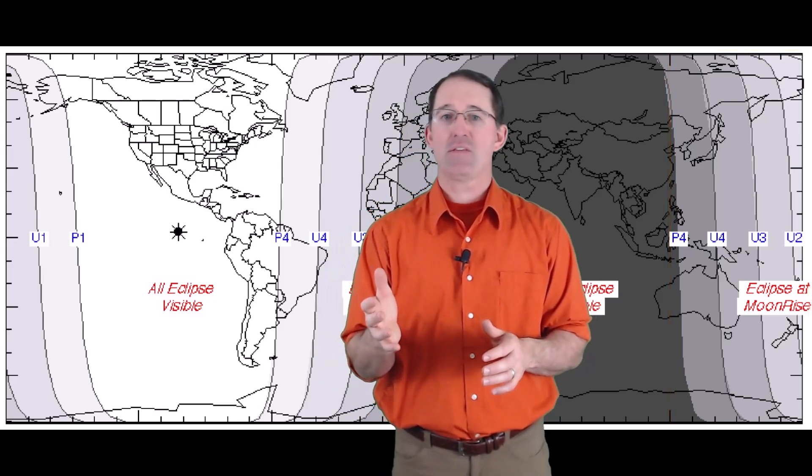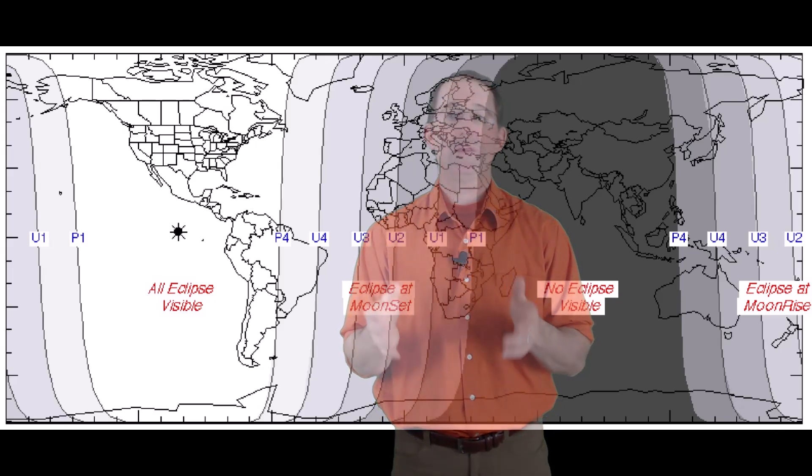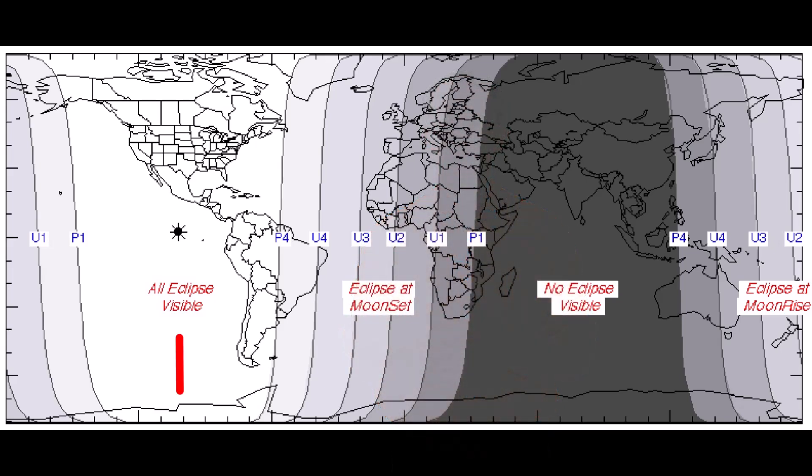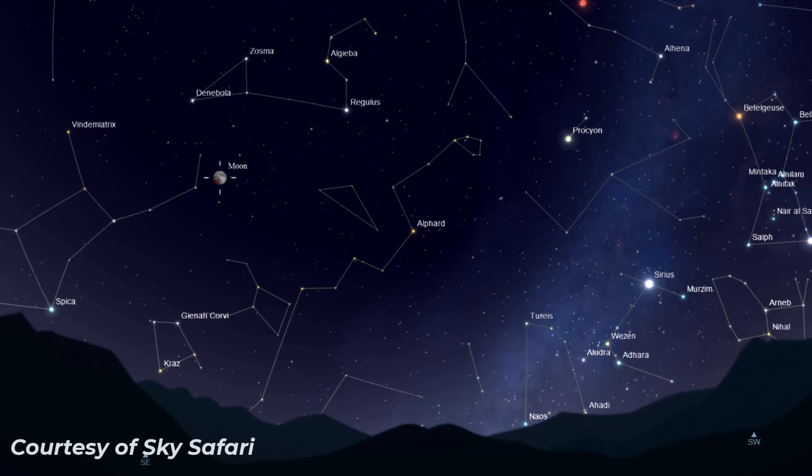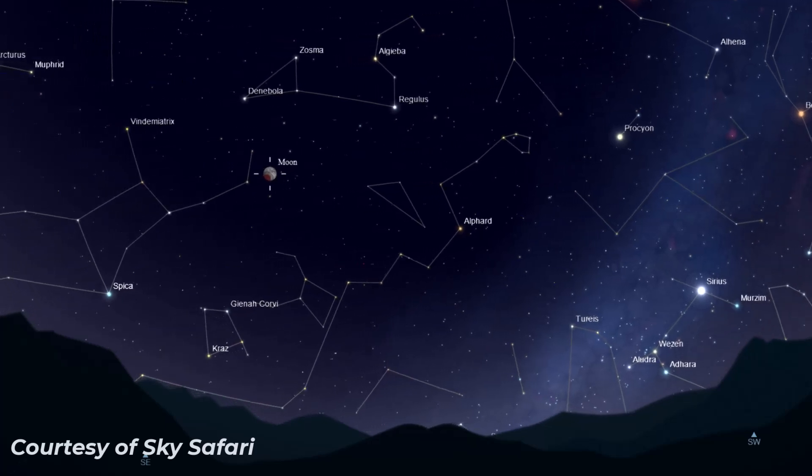The only bad thing is that this eclipse will take place truly in the dead of night. See this line right here? That essentially marks the places on the globe where the eclipse will peak at midnight. Now this also means that the moon will be nearest highest point in the sky for the night during the eclipse.